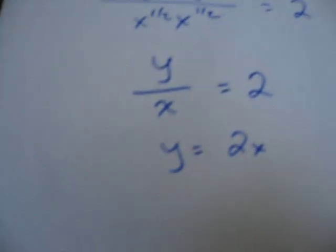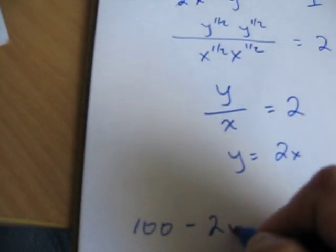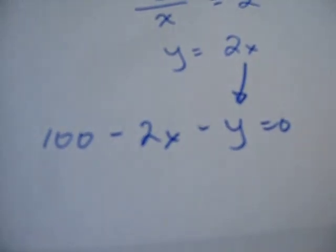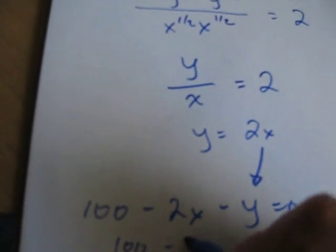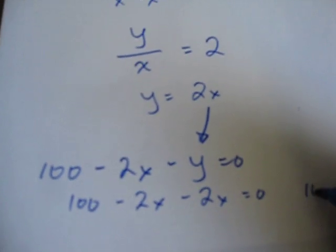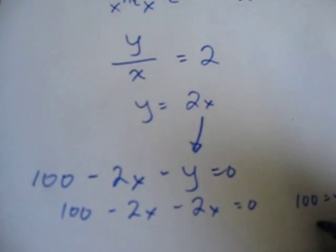Now we go back to our budget line: 100 minus 2x minus y is equal to 0. Plug that in right there. 100 minus 2x minus 2x is equal to 0. 100 is equal to 4x, or x is equal to 25.